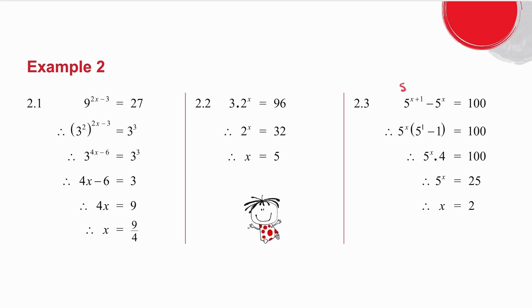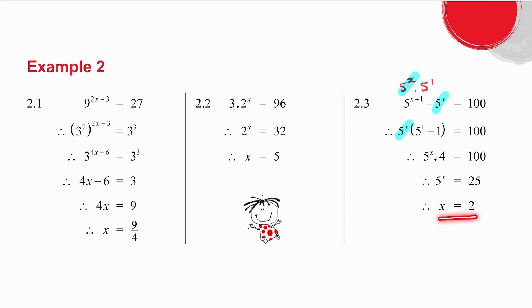5 to the x plus 1 can be written as 5 to the x times 5 to the 1. There are two terms, so I take out a common factor of 5 to the x, leaving 5 to the 1 minus 1. 5 minus 1 is 4. I take it to the other side and divide. 5 to the power what is 25? It's 5 squared, so x is equal to 2.